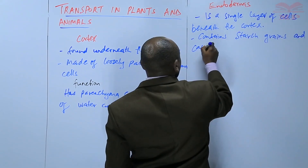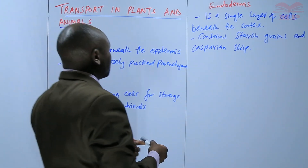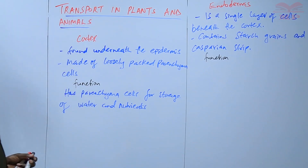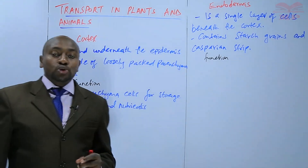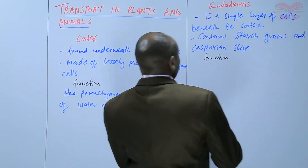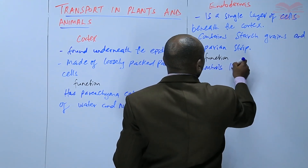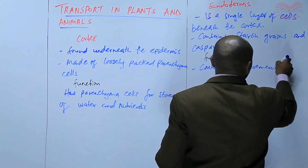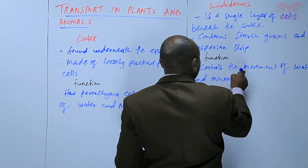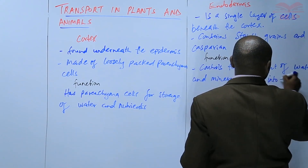The endodermis also contains the Casparian strip. Its function: the presence of the Casparian strip, which is impervious, is the one that controls the movement of water and mineral salts into the xylem. So the endodermis controls the movement of water and mineral salts into the xylem.